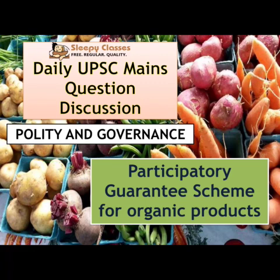Today we are looking at the mains question under our MAD series, which concerns the Participatory Guarantee Scheme for Organic Products. Technically this is a question that can be asked in GS1, GS2, or GS3. The Participatory Guarantee Scheme is for organic products, which is part of agriculture studied in human geography, and it is also a scheme — so it touches governance.